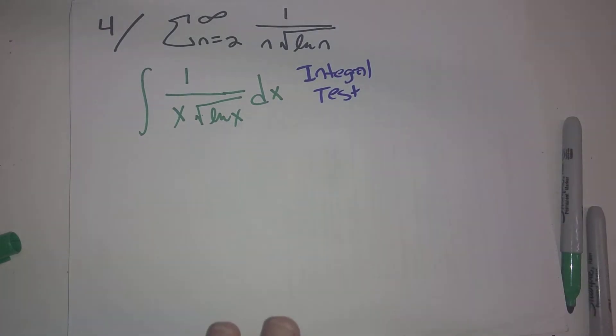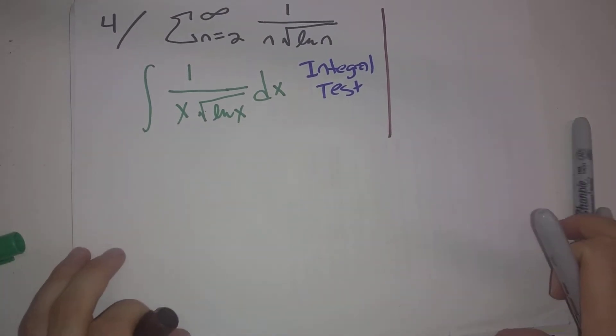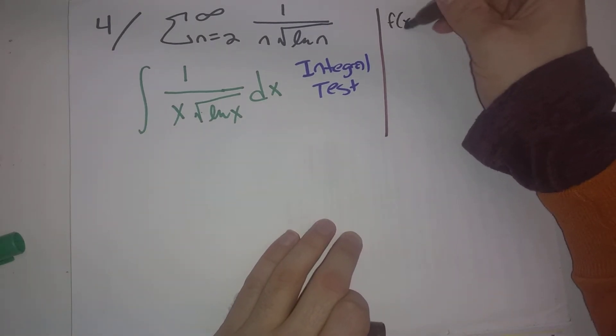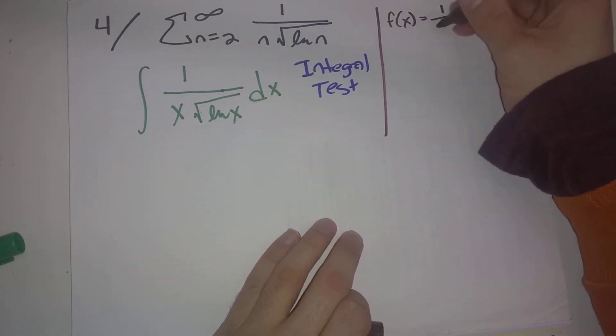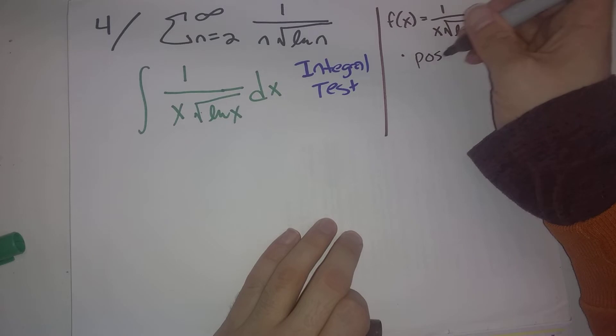So what are the things that we have to do to make sure we can apply the integral test? Let's think about the function f of x is 1 over x times square root of natural log of x. So this is positive.